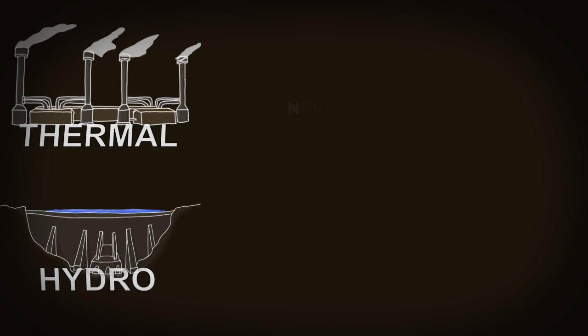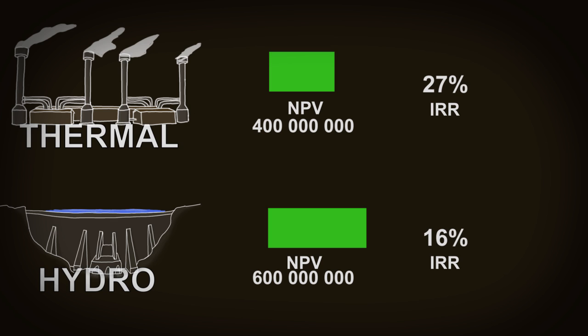Consider these two projects for generating power. Let's assume these are mutually exclusive, we only need one of them. And let's assume there's no budget constraints. The thermal plant has a higher internal rate of return, does that mean we should go with that option? Well, no. If we did that, we would be out 200 million dollars of net present benefits to society. It's the net present value that is the main signal for whether a project is better or worse than another.